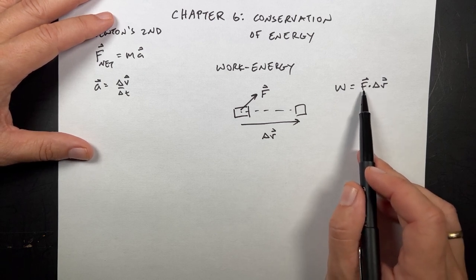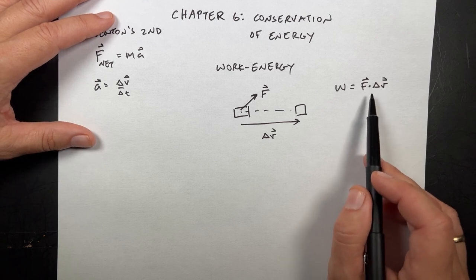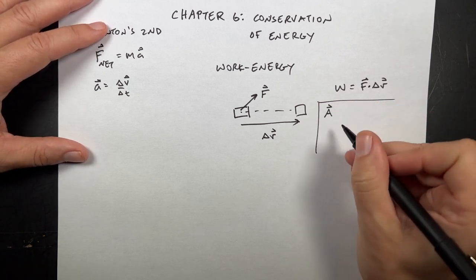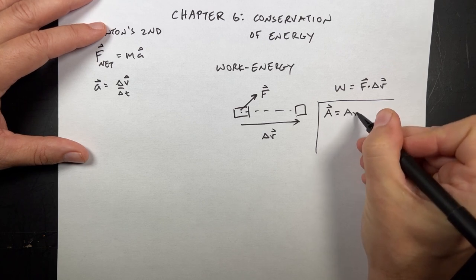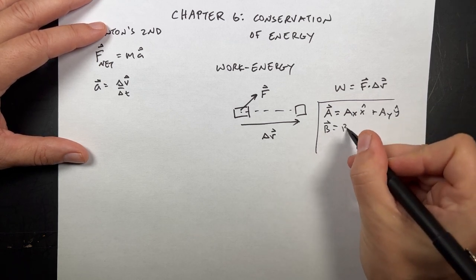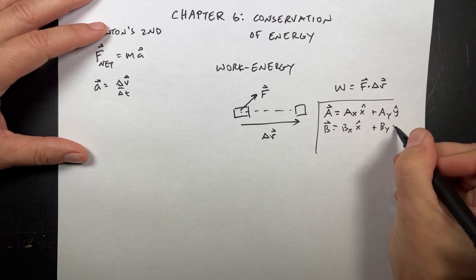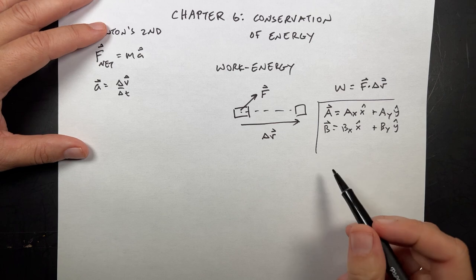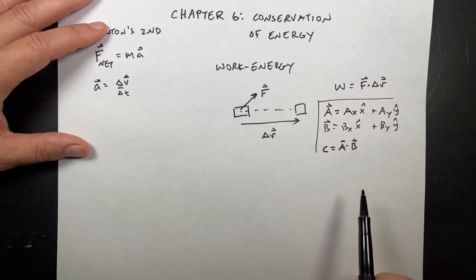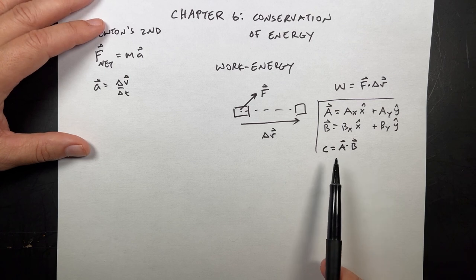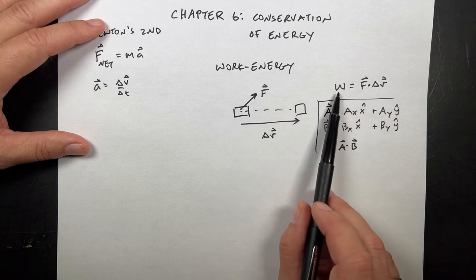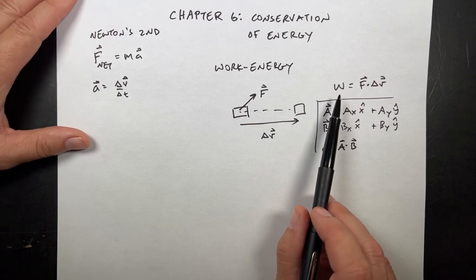If you have two vectors, you can't simply multiply them together. This is another vector operation called the dot product. Suppose I have vector A — in two dimensions — written as A_x x-hat plus A_y y-hat, and vector B is B_x x-hat plus B_y y-hat. I can define the dot product: C equals A dot B. You'll notice right away that C is not a vector — this is an operation between two vectors that gives a scalar value. This is important because work is a scalar value; it has no direction.